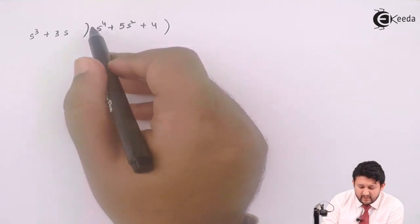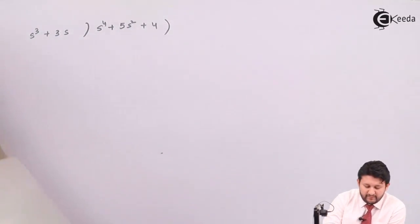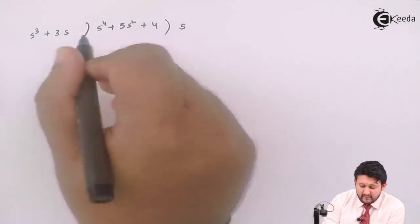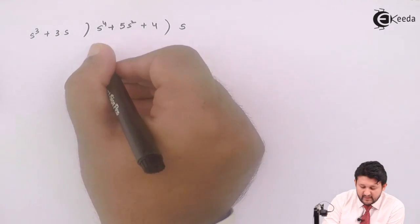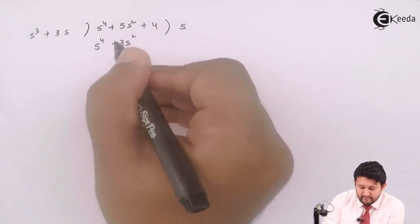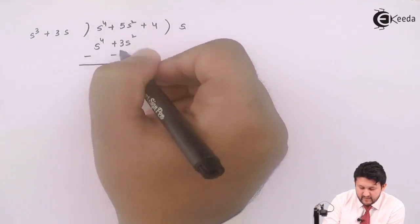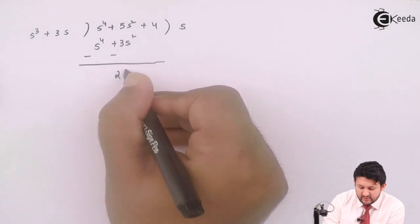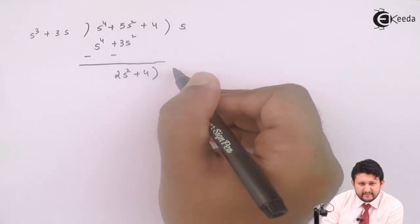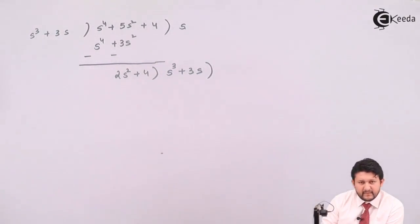The highest power term should be divided by the highest power term over here - that means s to the four divided by s squared. The term which you'll be getting is s squared. After getting this term, multiply this term with all of it over here. So you'll get s to the four plus three s squared. Change the sign. Cancel - the value which you'll get is two s squared. Shift this. So that is n(s). That means s squared.